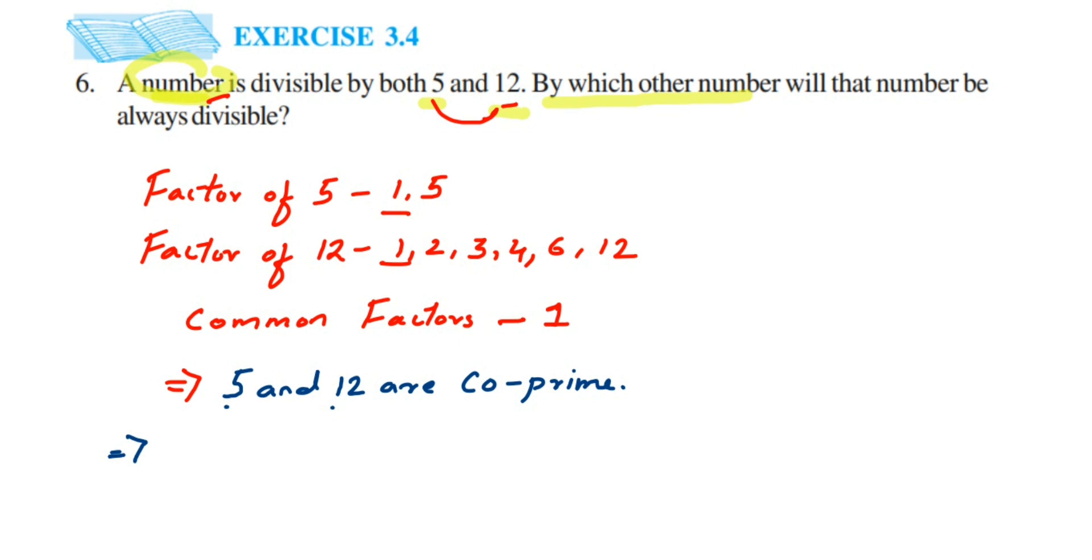Now here, so 5 into 12 is equal to 60. Now 5 into 12 are multiplying because they are co-prime. If they are not co-prime, we will not do that.